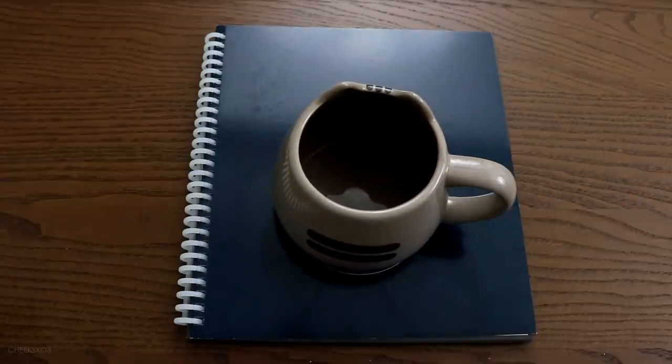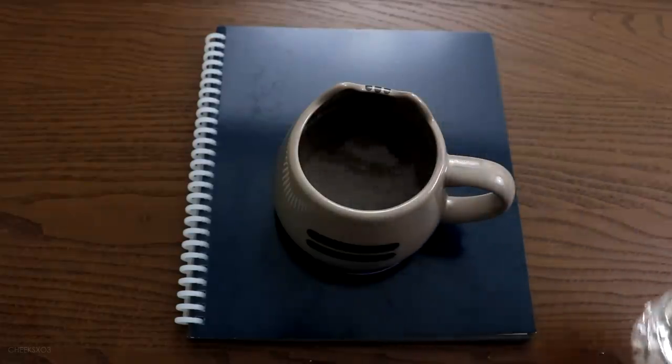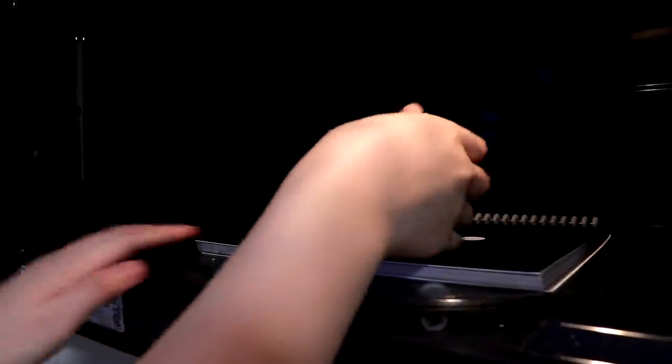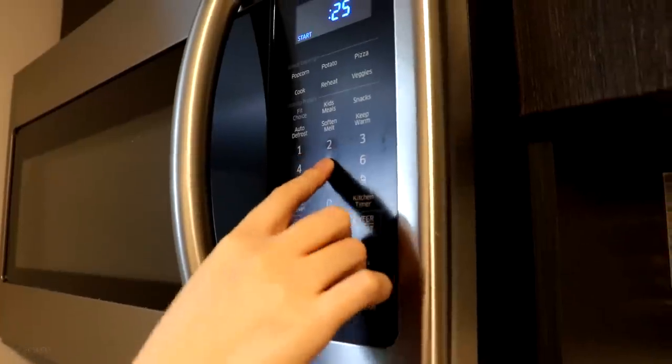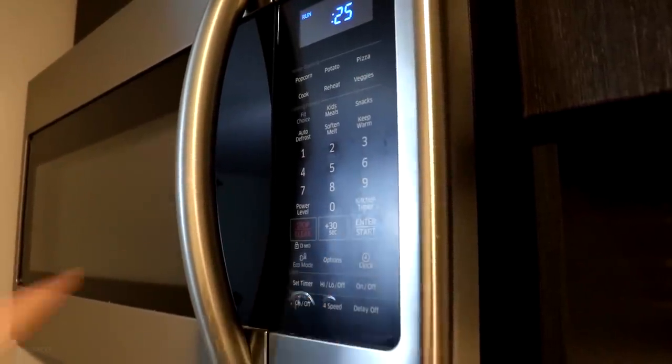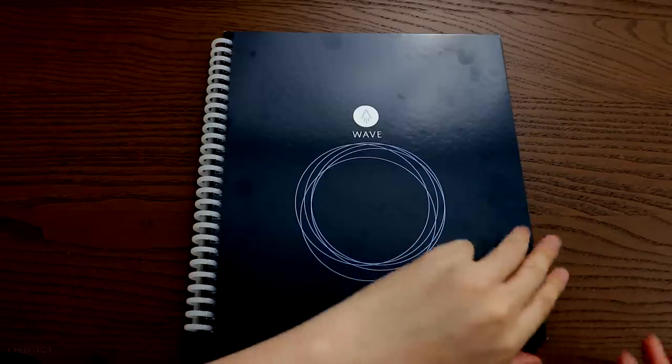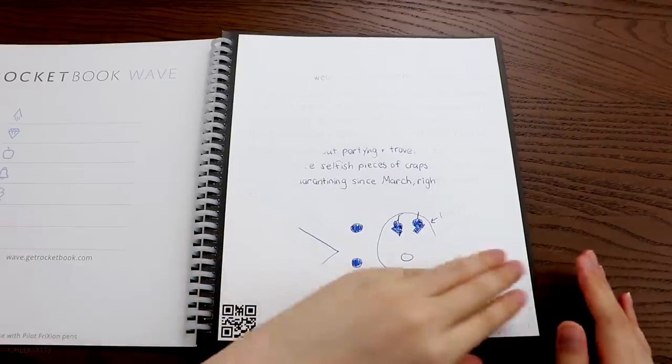To do that, the directions say to fill a mug three-fourths of the way up with room temperature water. You put that on the circle on the cover of the notebook and you microwave in 30 second increments. You make sure you check it every 30 seconds until the arrow disappears and that's when you know it's done. I was too scared for this to catch on fire or something, so I did it in 25 seconds instead. It took about three times before the arrow disappeared. I was so disappointed because it didn't completely erase everything.